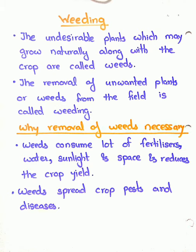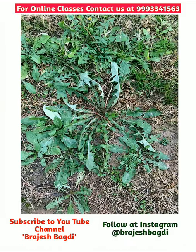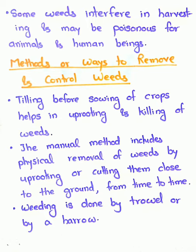Weeds also spread crop pests and diseases. Some weeds may be poisonous for animals as well as human beings. Some weeds interfere in harvesting and may contaminate crops with poisonous substances. That is why it is necessary to remove them. So we have seen several points explaining why weeds must be removed.